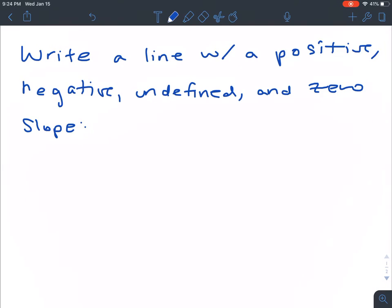So again, write a line with a positive, negative, undefined, and zero slope. I guess I want four different lines, so if you need to go through and do like A, B, C, D for this, you can.